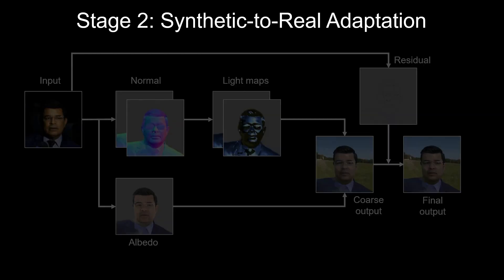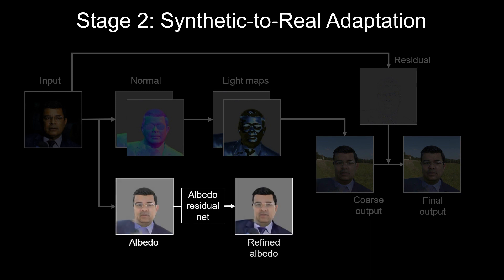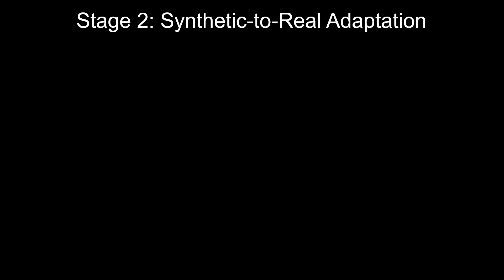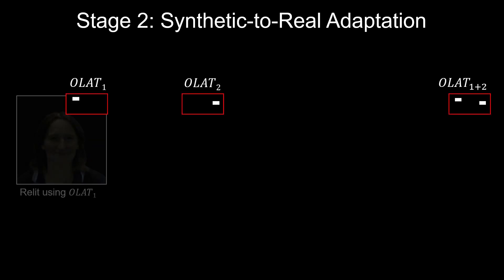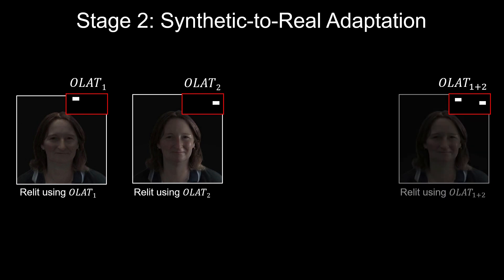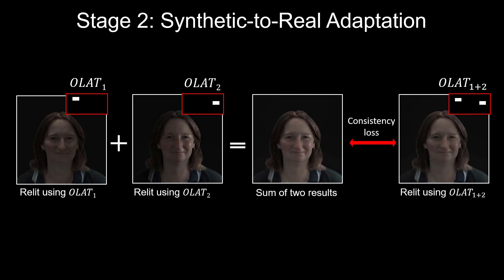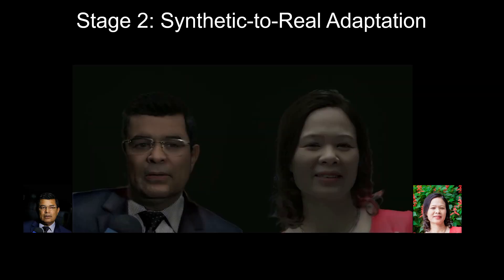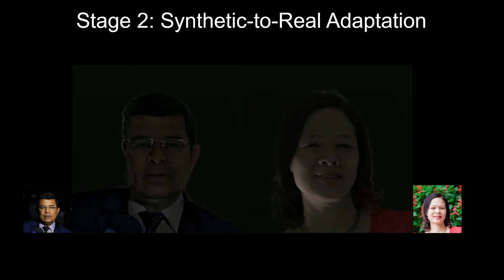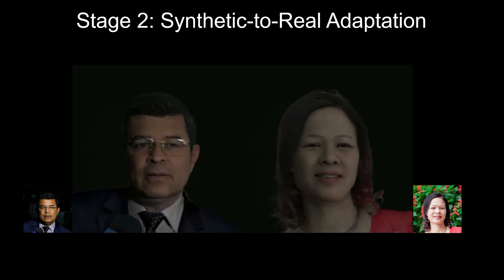In the second stage, we apply synthetic-to-real adaptation to increase the output realism. We observe that the domain gap mainly comes from the albedo map, so we add a network to refine the albedo while keeping everything else fixed. To prevent the output from violating the lighting physics, we add novel losses to ensure lighting consistency by relighting the input using OLAT maps. This also enables us to generate better OLAT videos, like shown here.